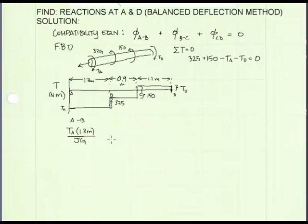The next term is from B to C. So, we will add to it. That's this term here in our compatibility equation. Phi from B to C will be T L over J G. T will be this level of internal torque here. Now, we don't know what the value is, but let's write it in terms of T_A. T_A plus 325 newton meters. That's our torque. The length is the length over which it's being felt by the member, 0.9 meters. Again, that's over J and G.